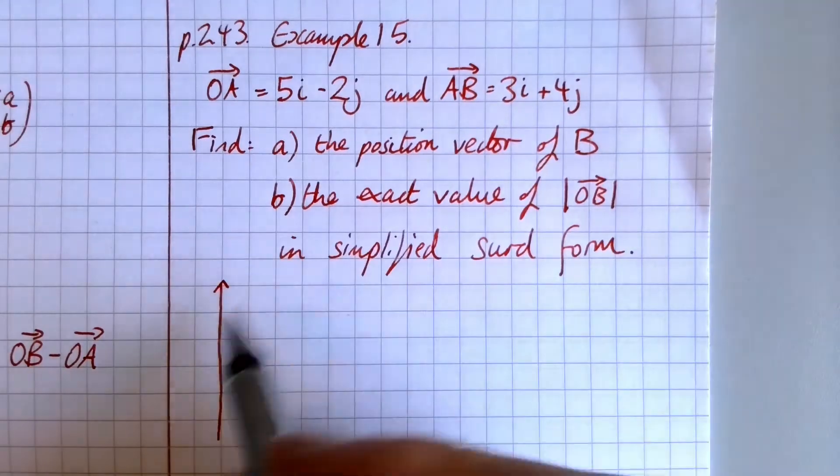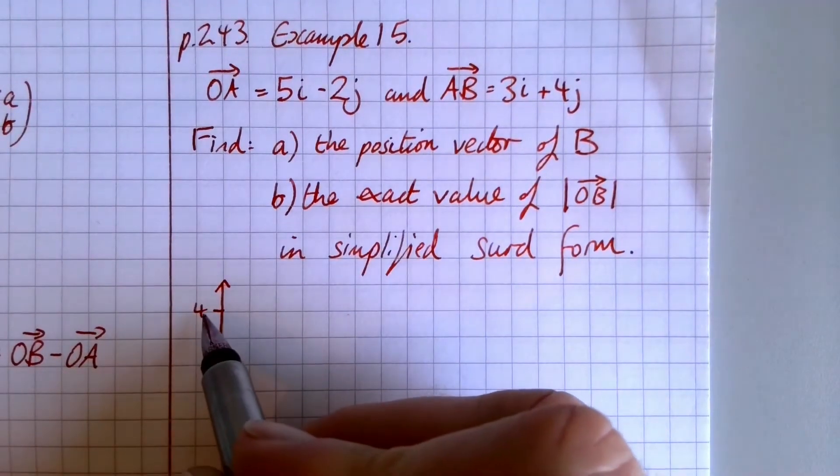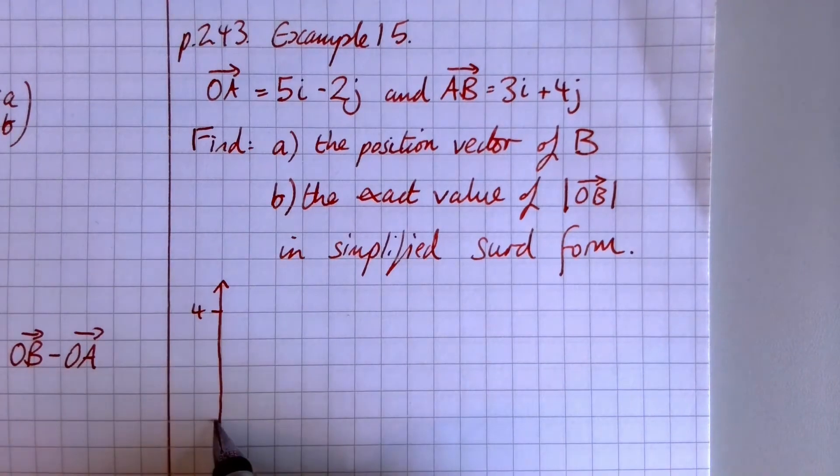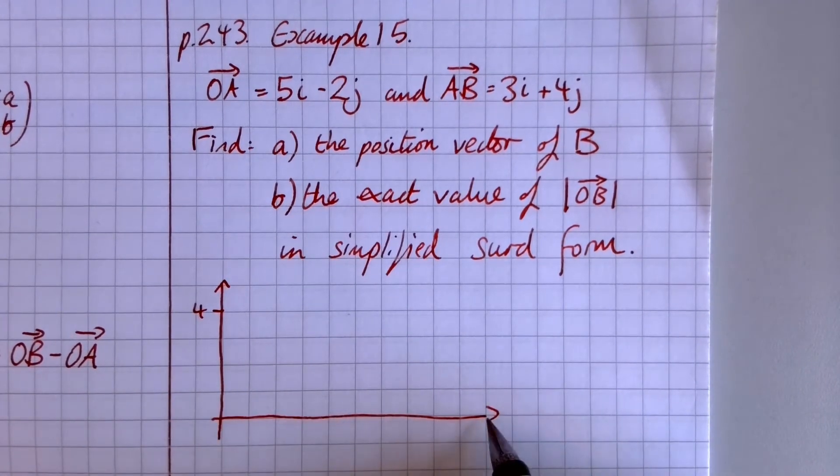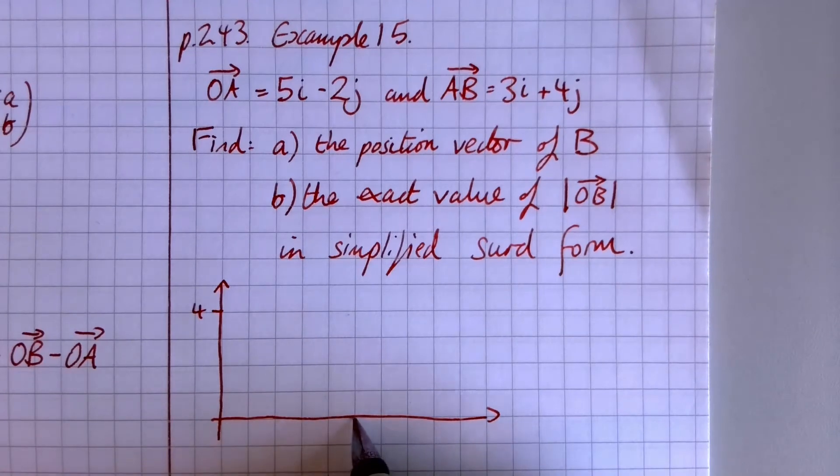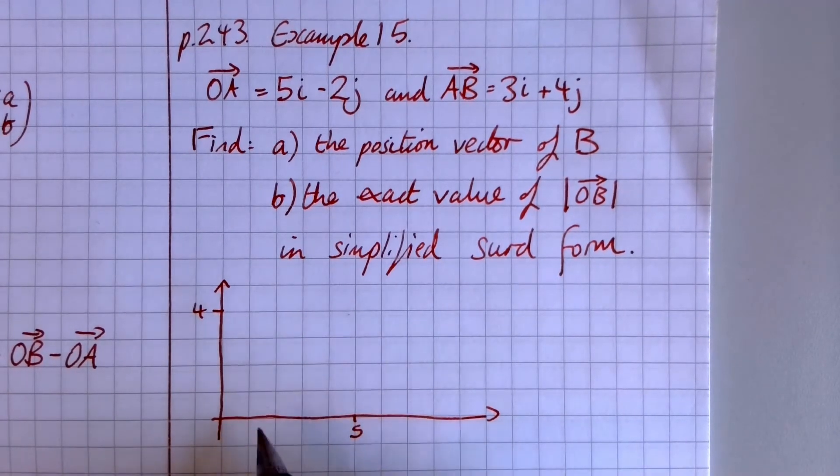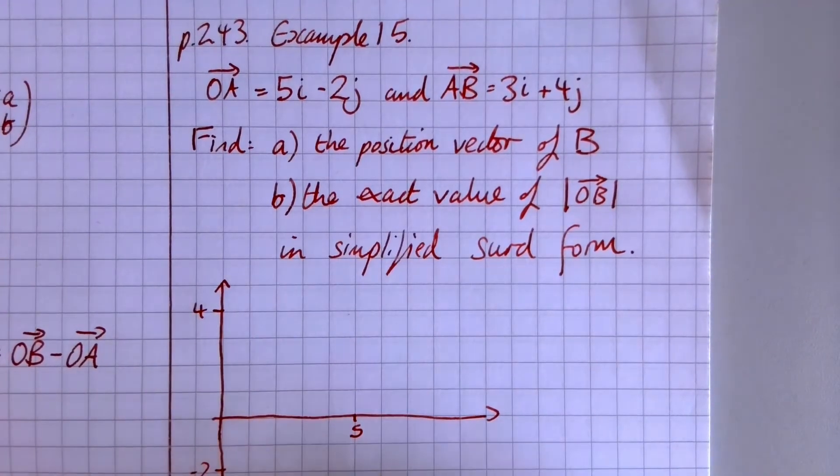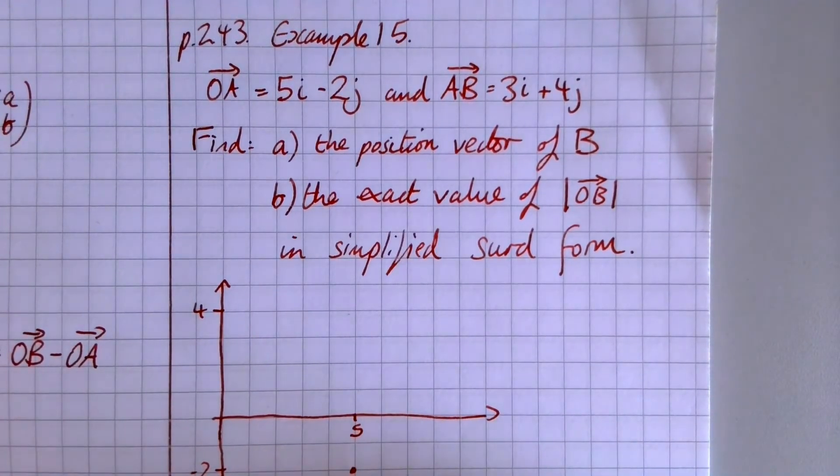And I know that my 4j is as far up as I'm going to be going there. And then 5i is as far along as we're going to go. 2, 3, 4, 5. So A is going to be at 5 and negative 2. So there's my A.